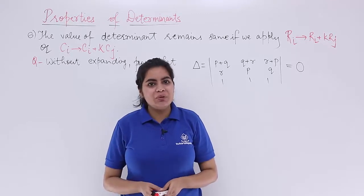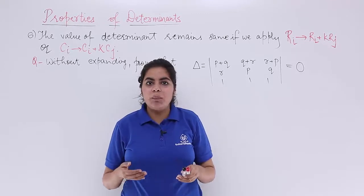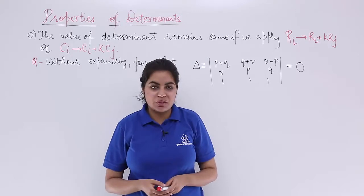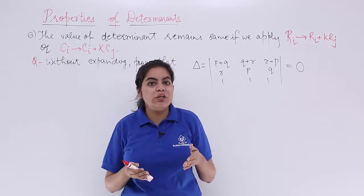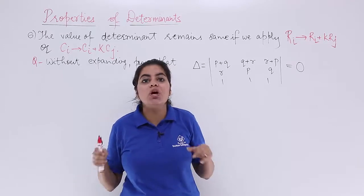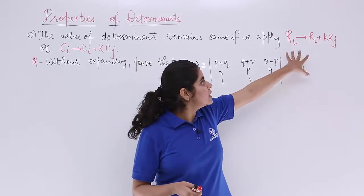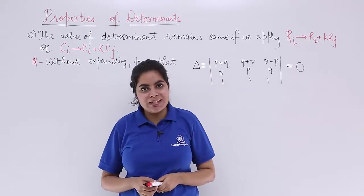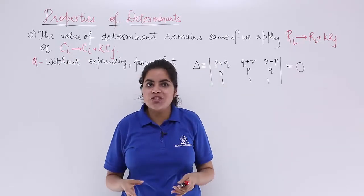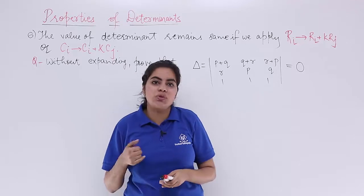In this video, let's see a numerical problem based on the property which we studied in the previous video. The property was property number 6 and it said that the value of determinant does not change when any operation of this sort for rows or of this sort for columns is applied. Let's see what question we have in this video and how to solve it.